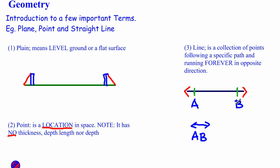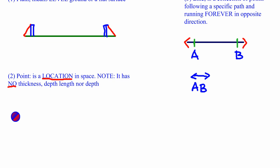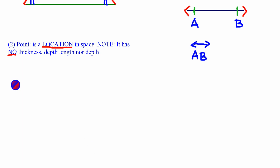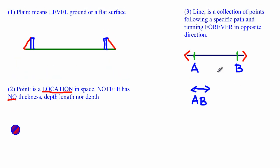There are different types of lines we should be aware of. The first type is a horizontal line — the line we've drawn running from left to right is called a horizontal line.